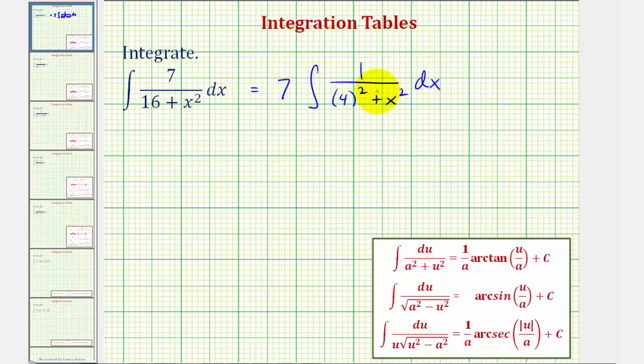But in this form, we should recognize that we can now apply this integration formula here. Because our denominator is in the form of a squared plus u squared, we'll notice a equals four and u equals x.